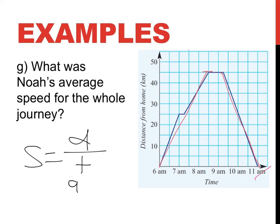How long did it take him? 1, 2, 3, 4, 5 hours. 90 divided by 5 is 18 kilometers per hour.